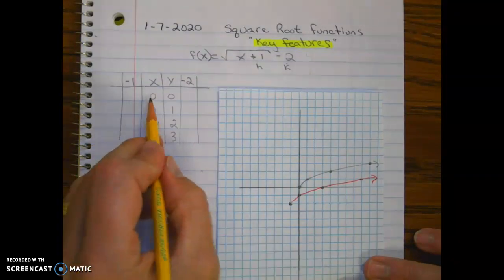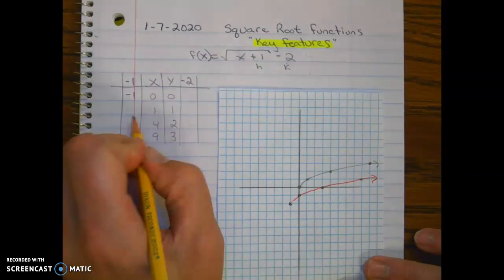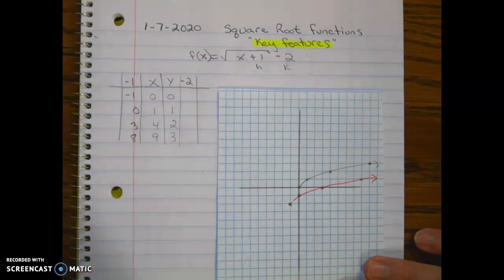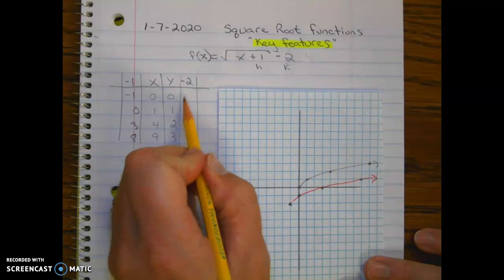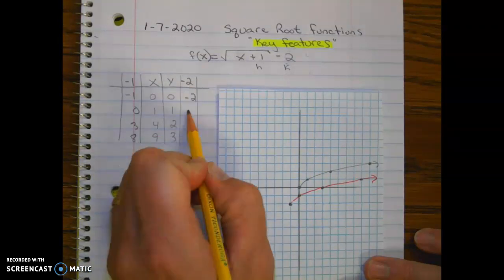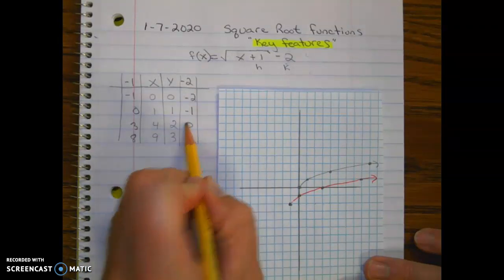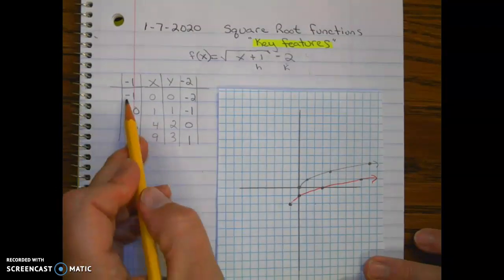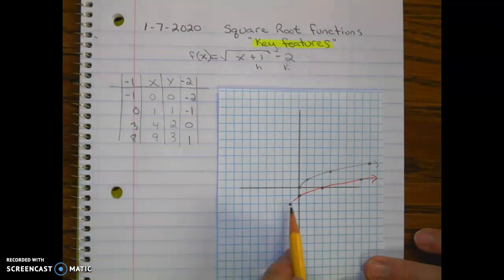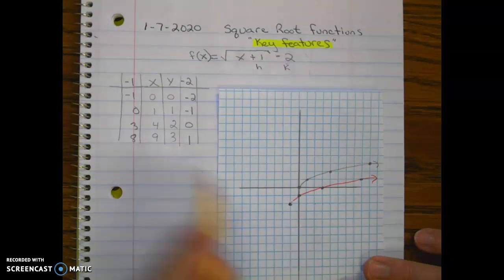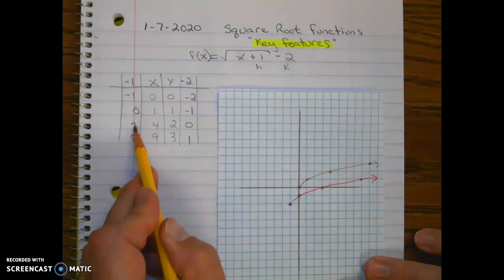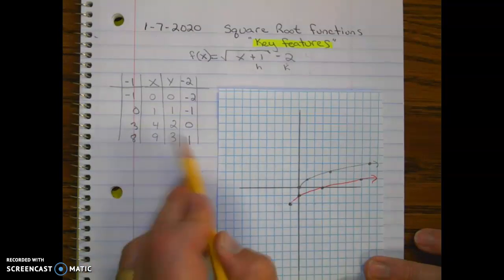So that's going to be negative one, zero, three, eight. Negative two, negative two, negative one, zero, and one. So let's see if it matches. Negative one negative two, zero negative one, three zero, eight one.